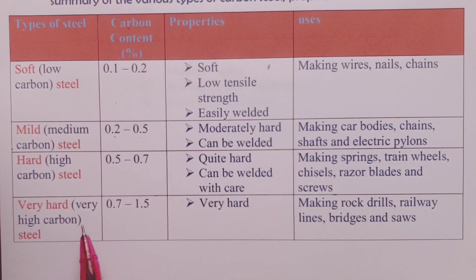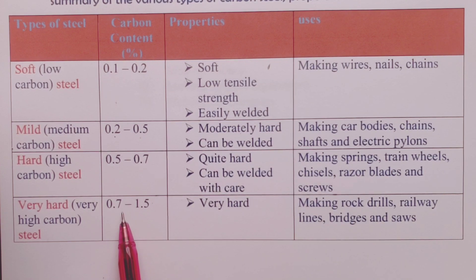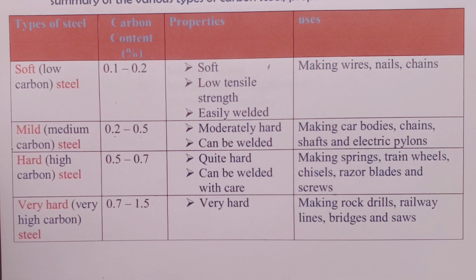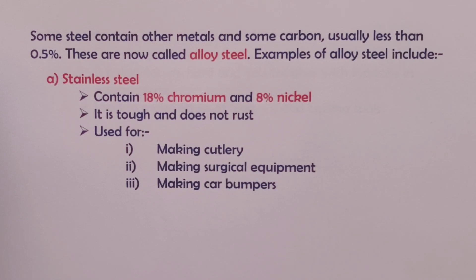Very high carbon steel has a percentage carbon content of between 0.7% to 1.5%. This is very hard and is therefore used for making rock drills, railway lines, bridges, and saws. We now continue to steel that has been blended with other metals — these are called alloy steels. Some steel contain other metals and some carbon, but this time less than 0.5%. Our first example of alloy steel is stainless steel.